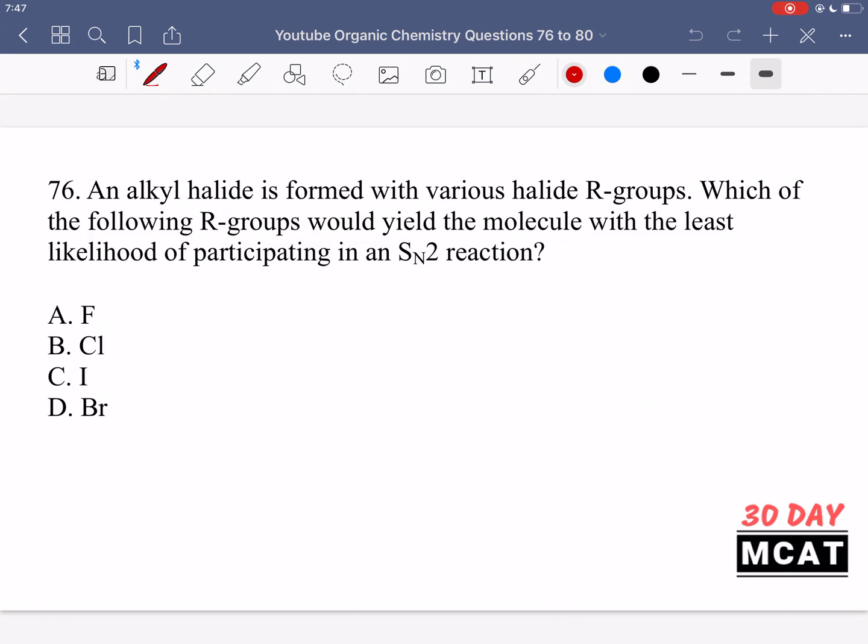Now let's go through the questions together. In question 76 it says an alkyl halide is formed with various halide R groups. Which of the following R groups would yield the molecule with the least likelihood of participating in an SN2 reaction? So we're talking about alkyl halides and we can have various halides with the R group. Which one would least likely undergo SN2?